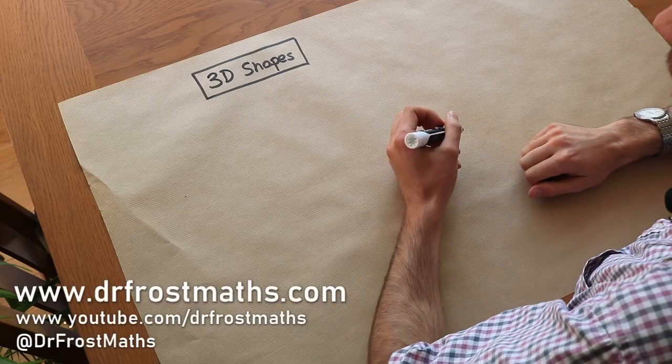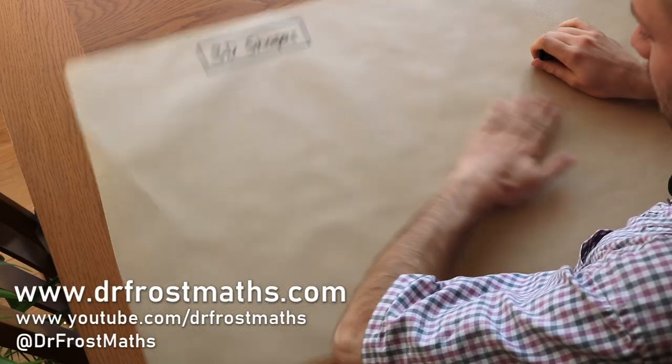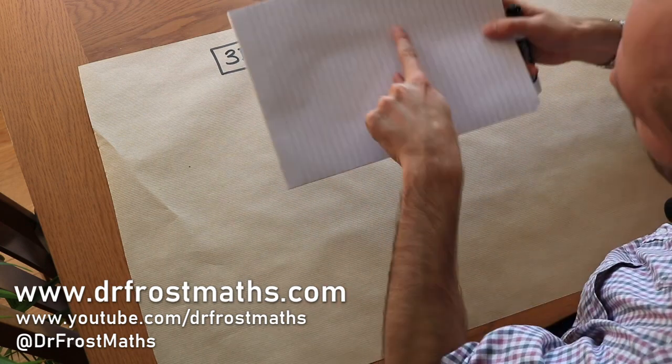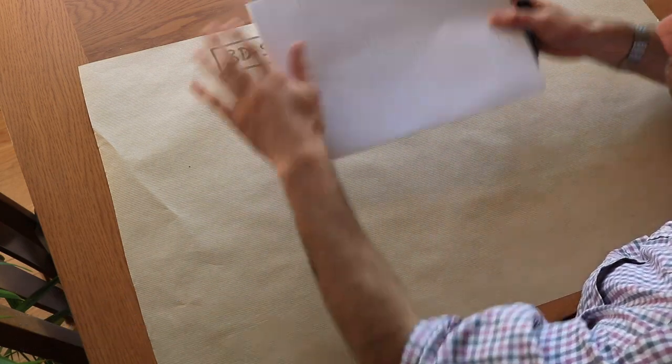Hello and welcome to this video on 3D shapes. Now 2D shapes are shapes which are flat. It might be that I draw on this piece of paper and that would be 2D, it's flat.